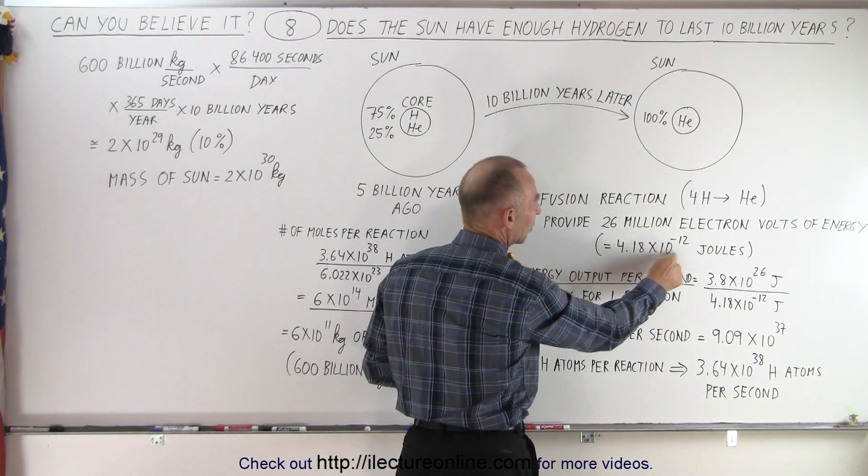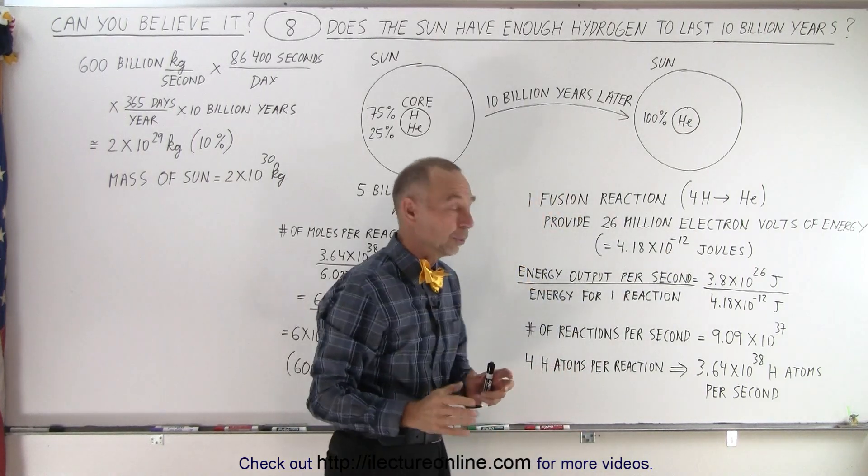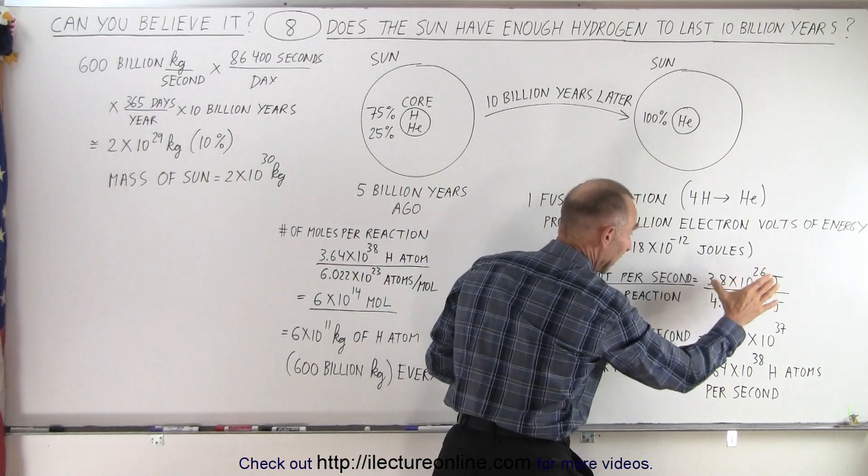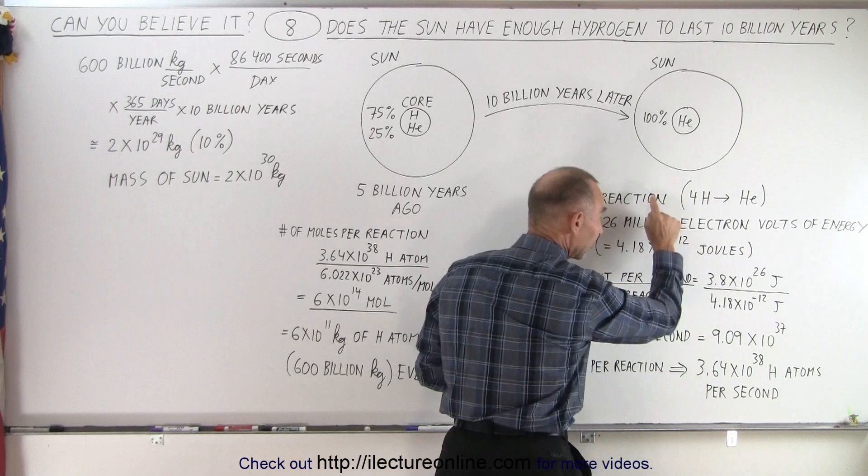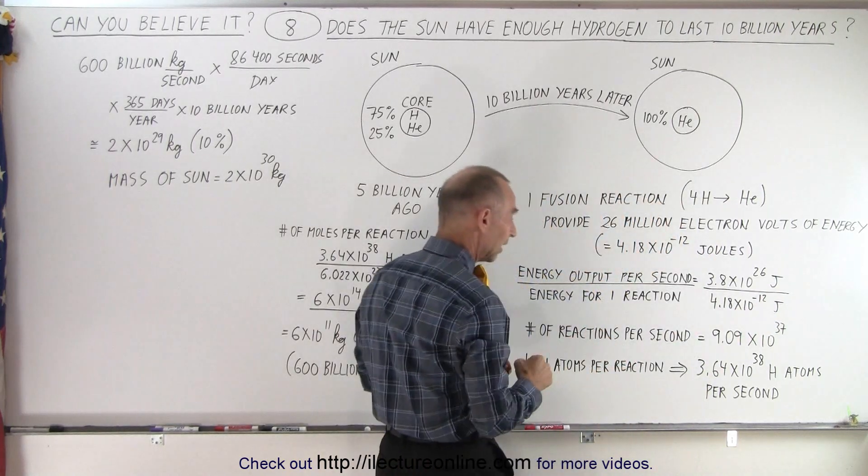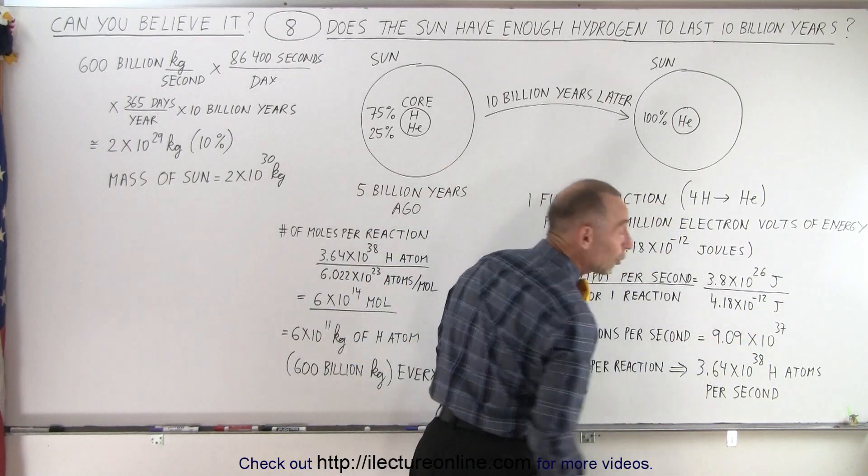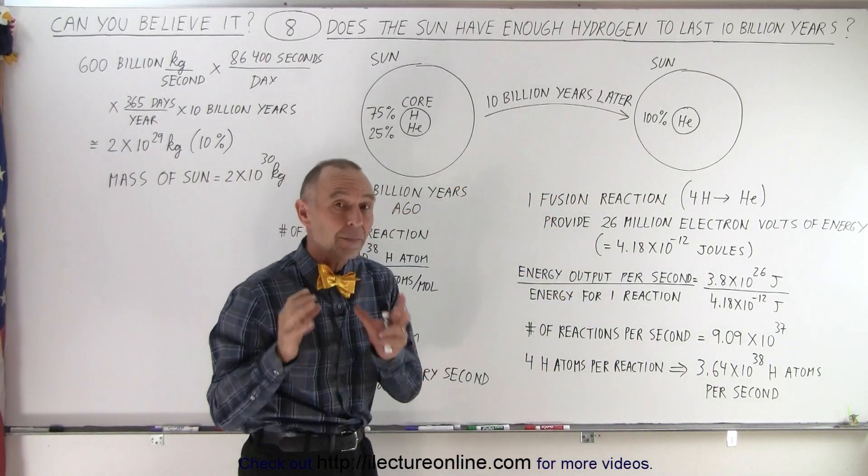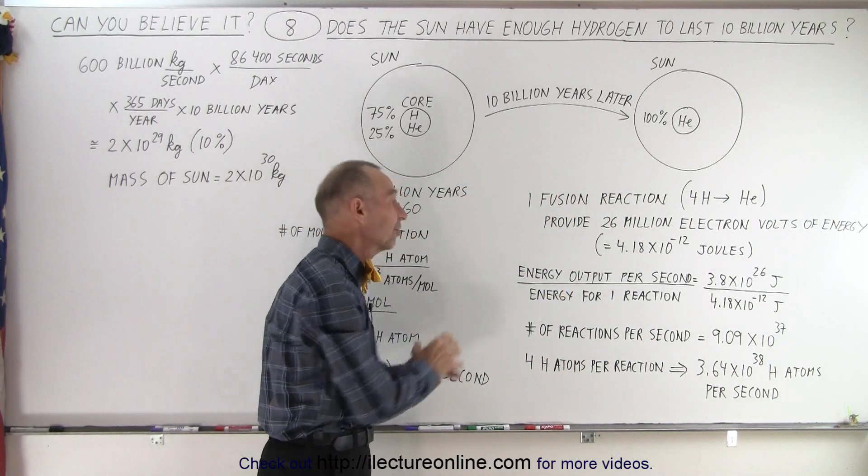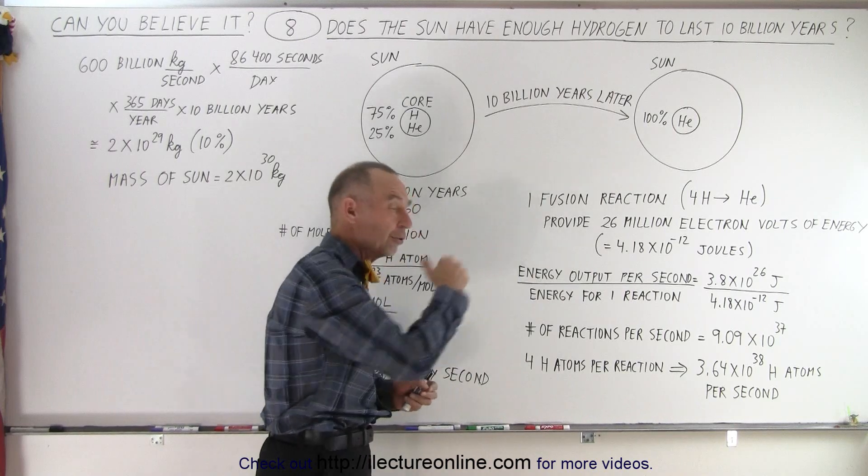which is 4.18 times 10 to the minus 12 joules. So, we take the total output of the Sun, and divide it by the output of one single one of those fusion reactions, and we end up with 9 times 10 to the 37 fusion reactions that must occur in the Sun every single second where hydrogen is converted to helium.